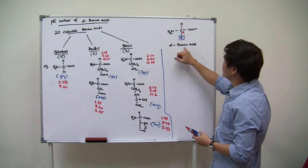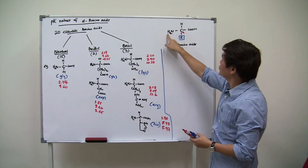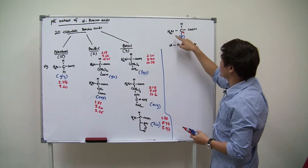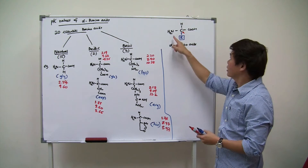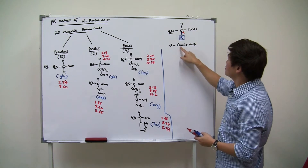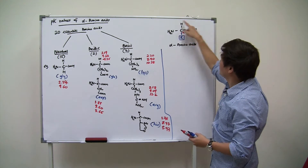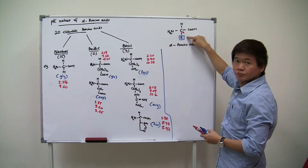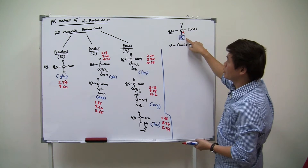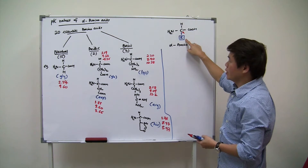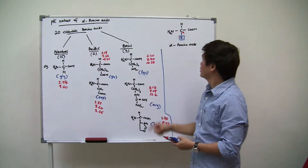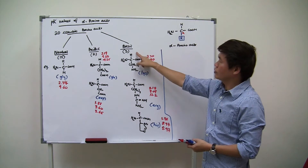The alpha carbon is attached to the amino group. It means that the amino group, which is the NH2 group, is attached to the first carbon after the acid carbon. That's why these structures are all called alpha amino acids — the amino group is separated from the acid group by only one carbon. This alpha amino acid has a template structure where the R group can change. We can classify amino acids through the R group: if it's neutral, it's a neutral amino acid; if acidic, an acidic amino acid; if basic, a basic amino acid.